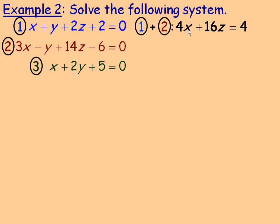So x and 3x add to 4x, 2z and 14z is 16z, and 2 and negative 6 is negative 4. When we bring that over to the right side it becomes positive 4. Notice everything there is divisible by 4, so let's divide everything by 4 and we get x plus 4z equals 1. And I'll call that equation 4.